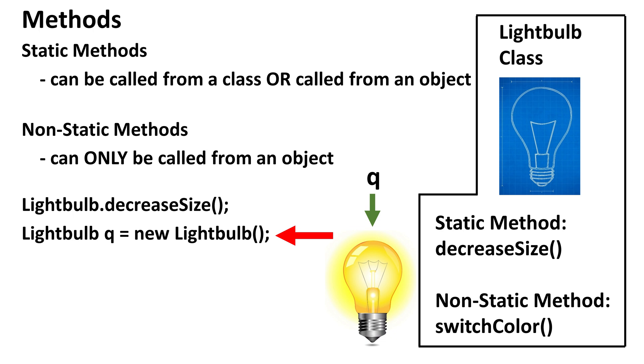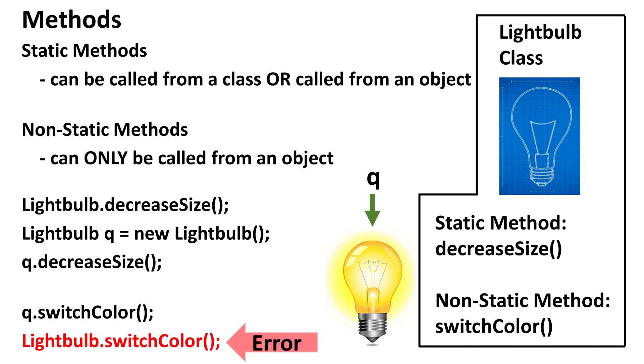Alternatively, we can create an instance of the lightbulb class. Now we can call the method decreaseSize from the variable q, which is pointing at a lightbulb object. We can also call the switchColor method from the q variable. However, as a non-static method, switchColor cannot be called directly from the lightbulb class. This line of code will give the error non-static method cannot be referenced from a static context.